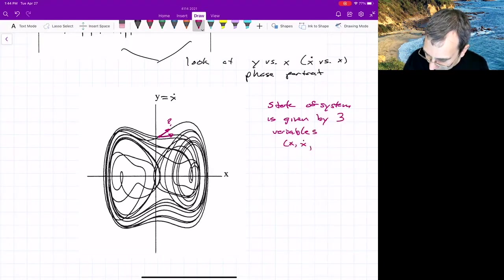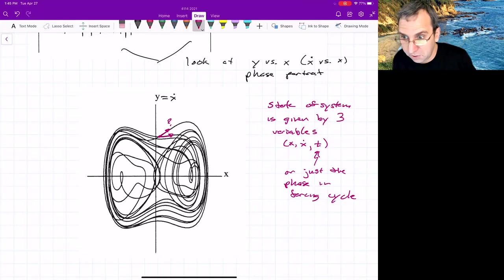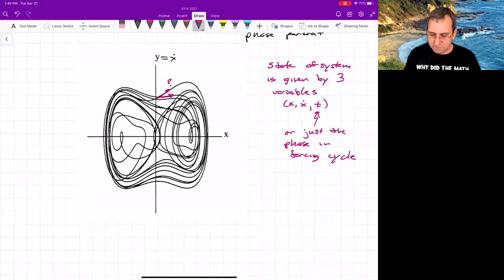So the state of the system is given by the three variables, X, X dot, and time, or just the phase in the forcing cycle. It's almost like because we have periodic forcing, we have a periodic time variable. So what we could do is instead of just looking at this spaghetti plot, we can strobe the system.